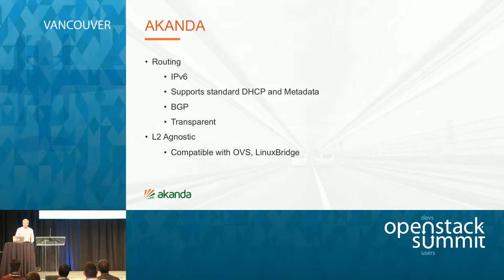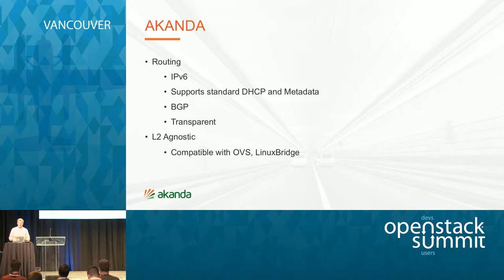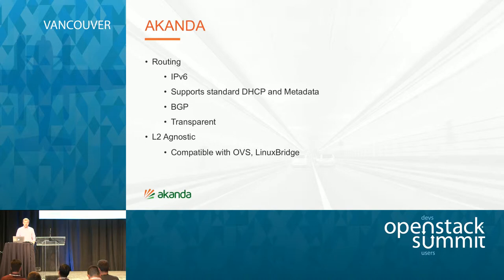So what actually is Aconda? It supports routing, IPv6, standard DHCP and metadata. Aconda also supports BGP and internal BGP. One of the things about Aconda is that it's transparent to the user — from the OpenStack interfaces, you couldn't really tell we were using Aconda. The tenant interfaces looked as you would normally expect, and all logical components were the same. Aconda is mainly for the back end, for the deployer side. It's also L2 agnostic — whether you're running OVS or Linux Bridge on your hypervisor, it will work.